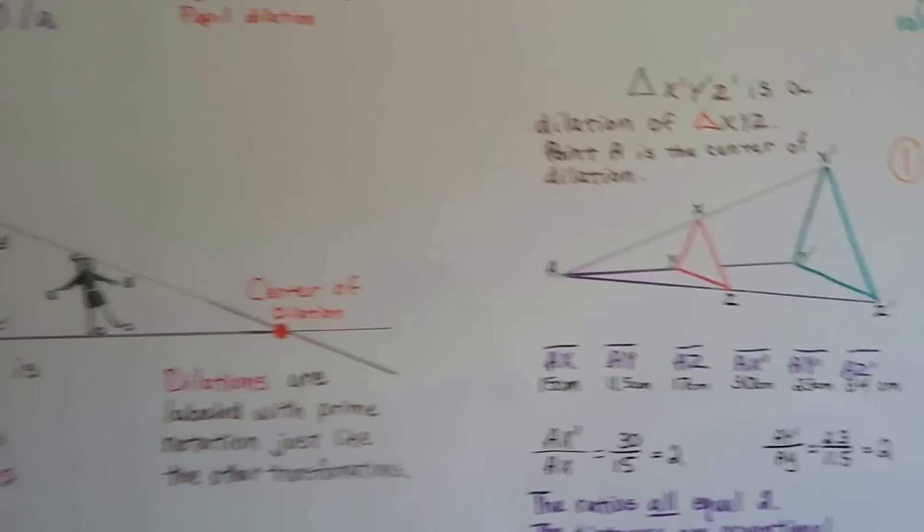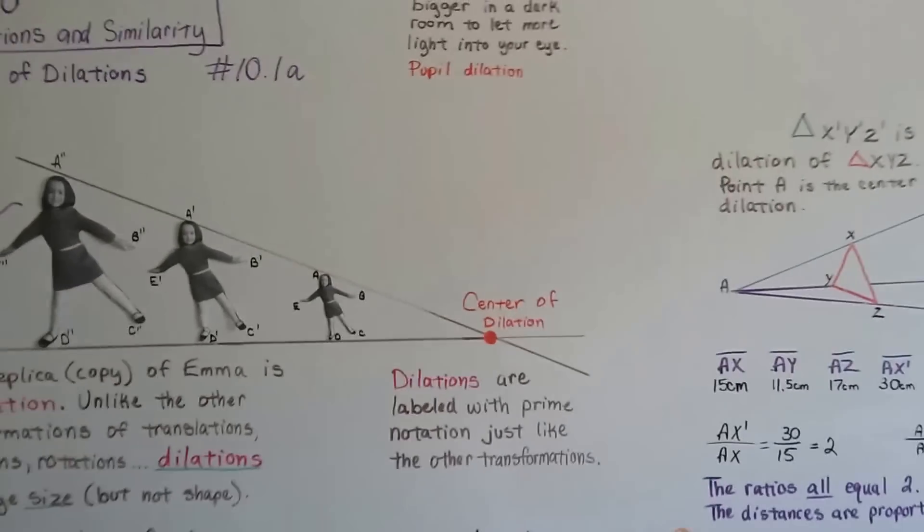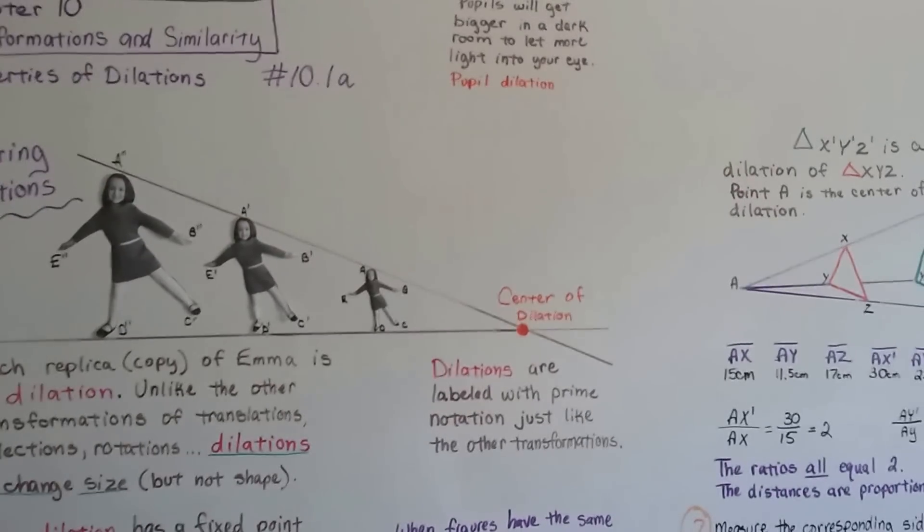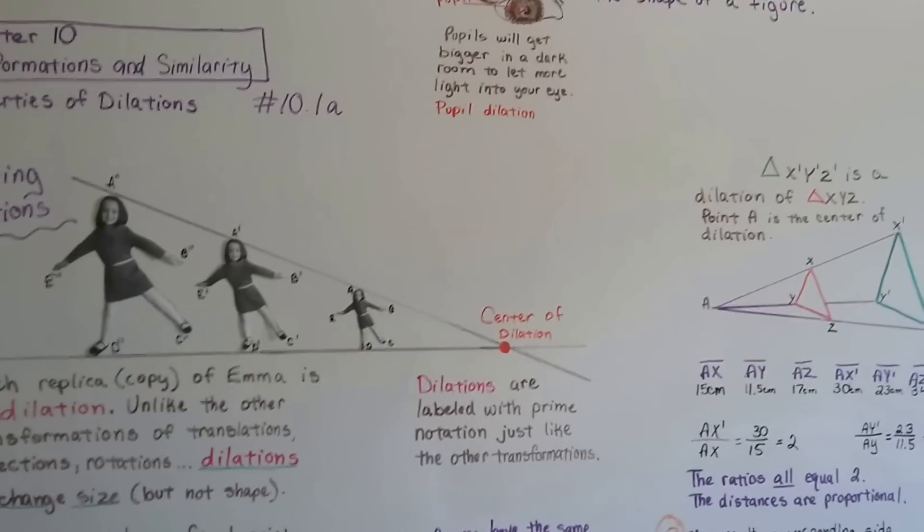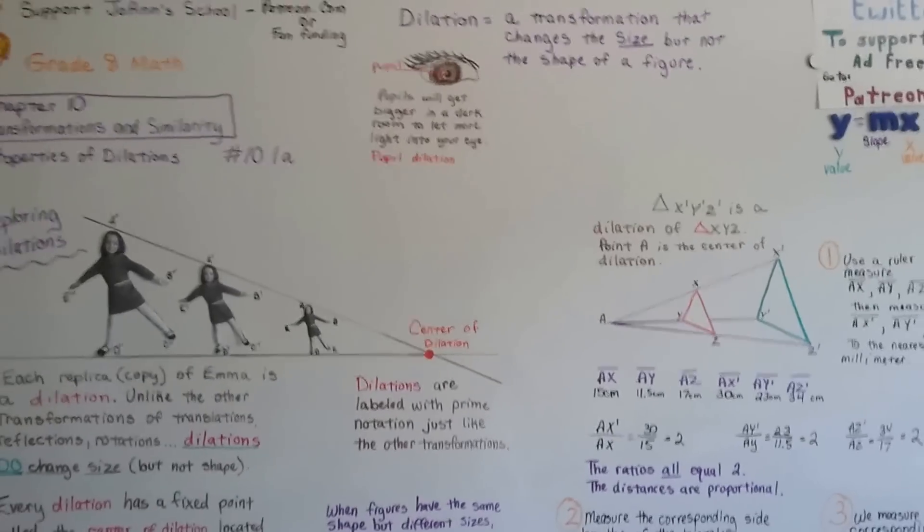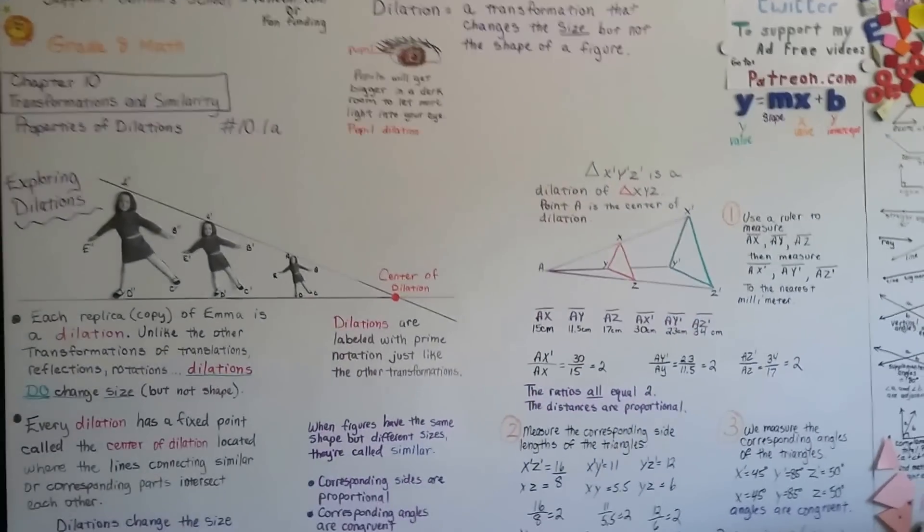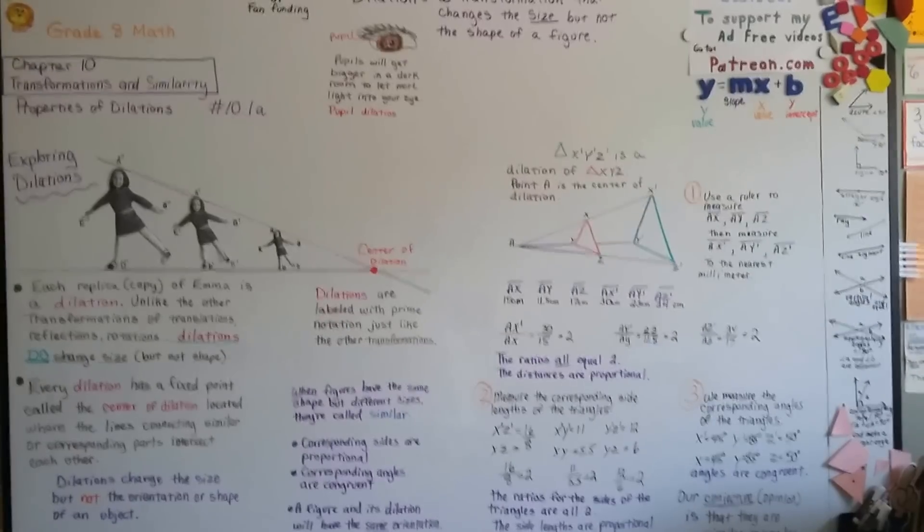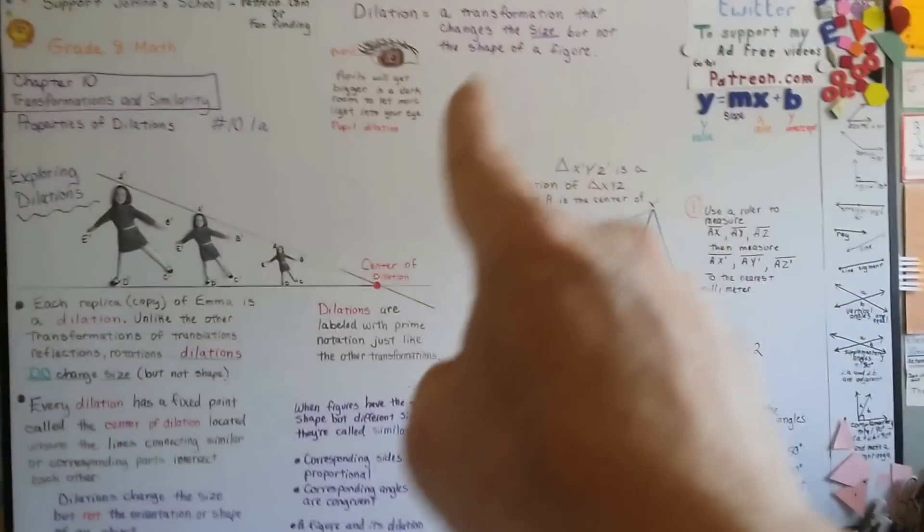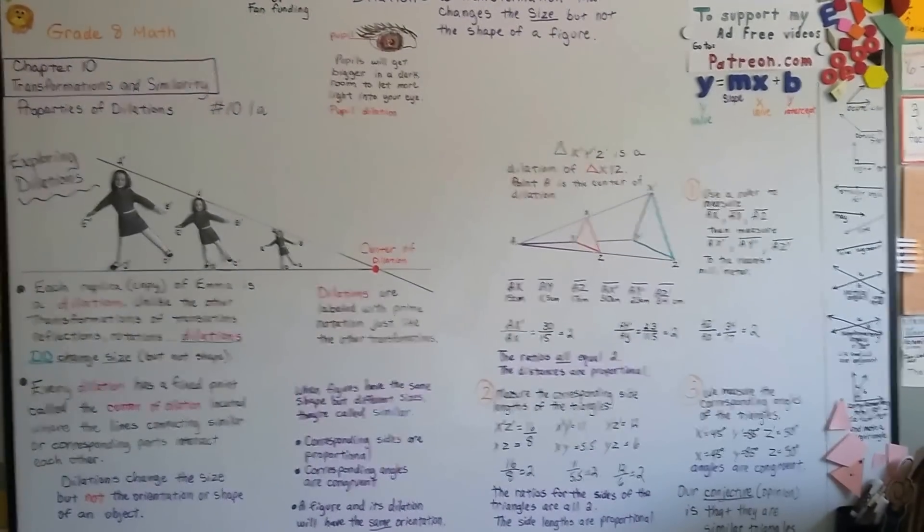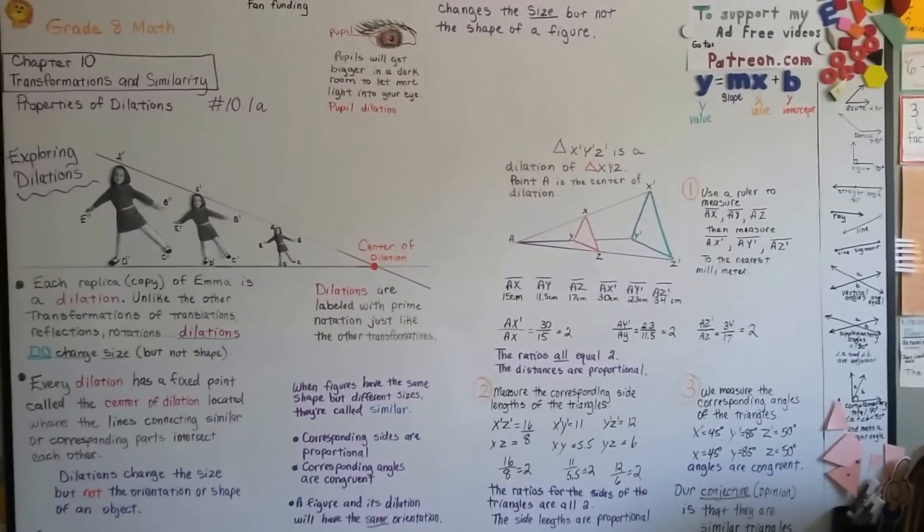Okay. We're going to continue on talking about dilations. And we're going to move on to 10.1b. And we're going to talk about dilations on a coordinate plane. I hope this was helpful. I know these are a lot of new terms for you. But just, whenever you come across a new term, like the term dilation, link it to something that you do know about, like eyes dilating. Alright. I'll see you next video. Bye.